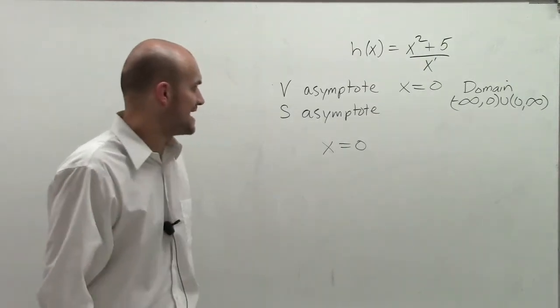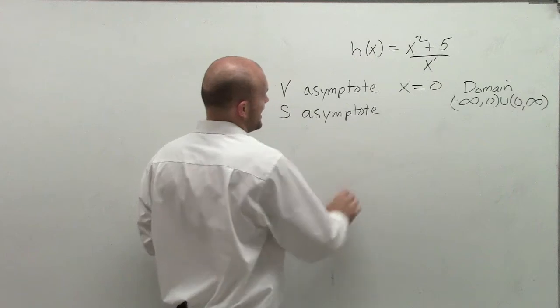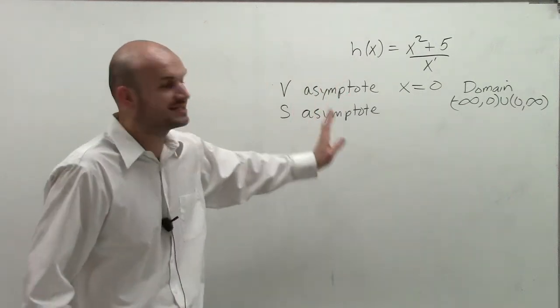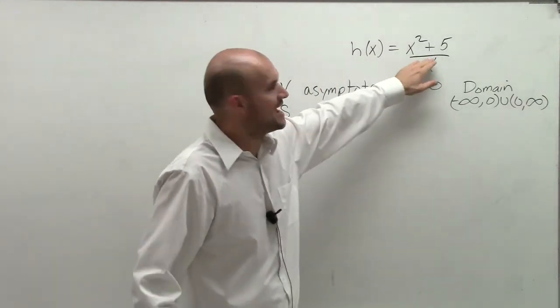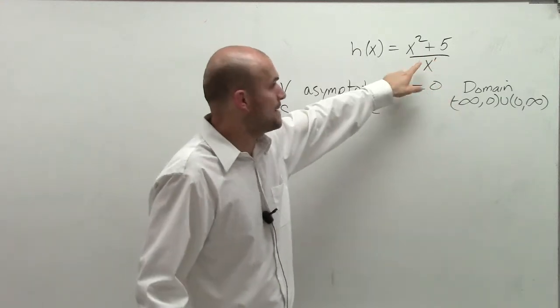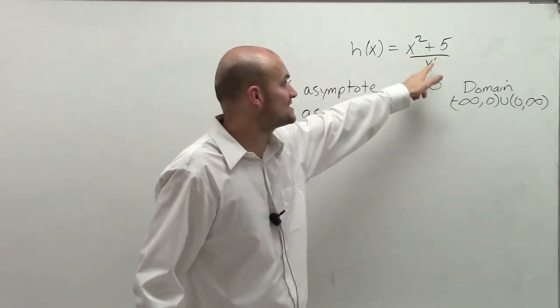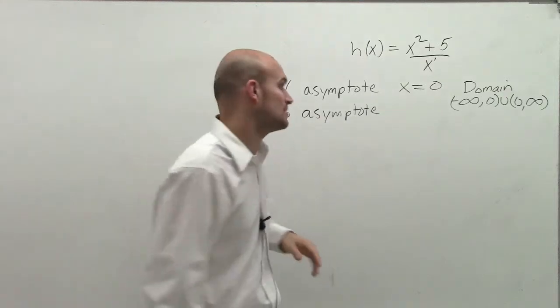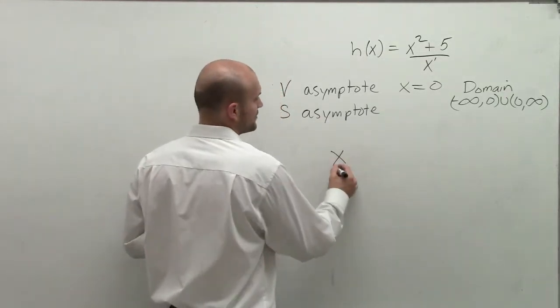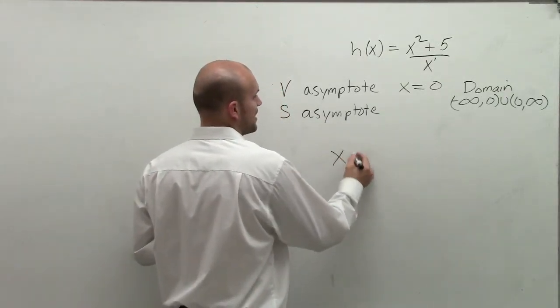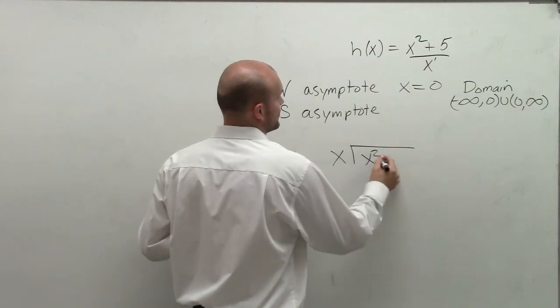Now, to find the slant asymptote. So I know that x equals 0 is my vertical asymptote. The slant asymptote, what we're going to do is, since we have this smaller degree, that means I can actually divide x to the first power into x squared plus 5. So that's exactly what I'm going to do. So I'm going to say x to the first power divide into x squared plus 5.